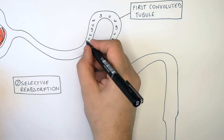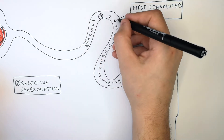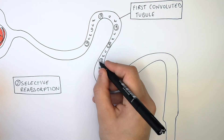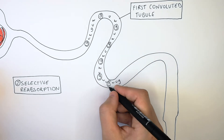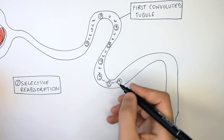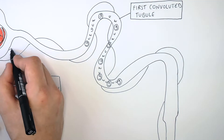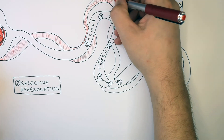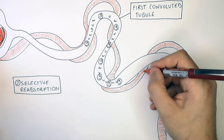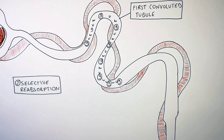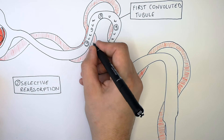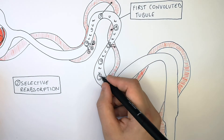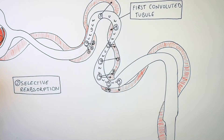It is the glucose that is now selectively reabsorbed back into the blood from the nephron. Water and urea remain in the nephron. The first adaptation of the first convoluted tubule is that it's surrounded by blood capillaries, giving a large surface area that increases the selective reabsorption of glucose back into the blood.